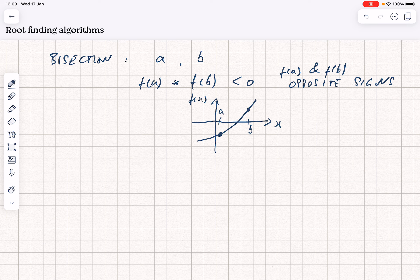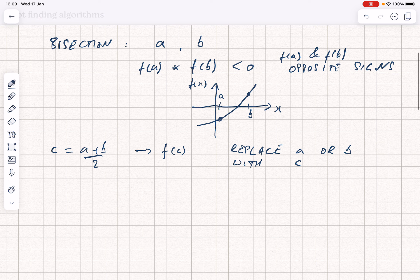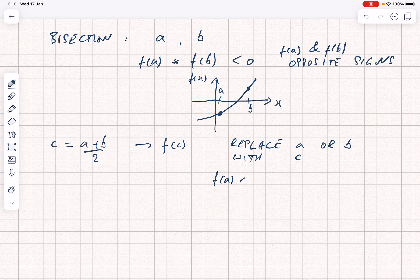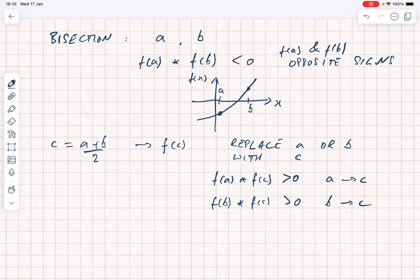The bisection algorithm simply tells you to evaluate C, which is halfway between A and B, and then that will give you a value f(C), and you replace either A or B with C depending on the sign. If f(A) multiplied by f(C) is greater than zero, they have the same sign, so you replace A with C. If f(B) multiplied by f(C) is greater than zero, then you replace B with C, and you repeat until you reach some tolerance.